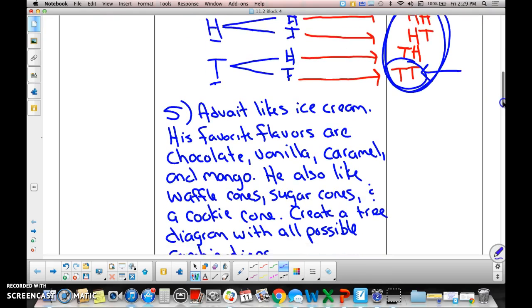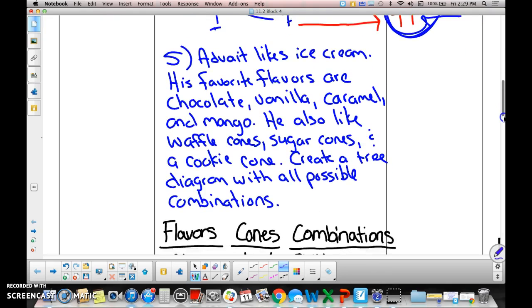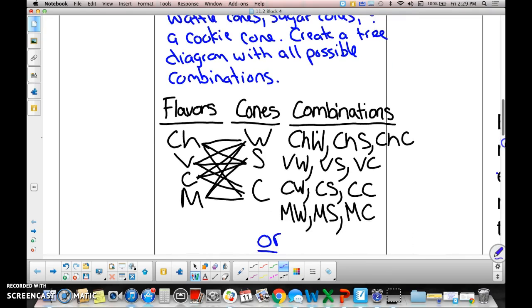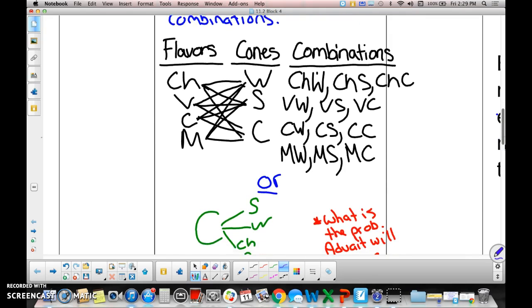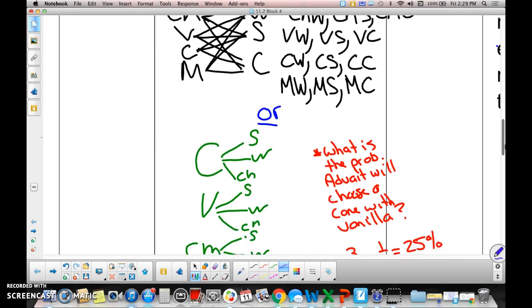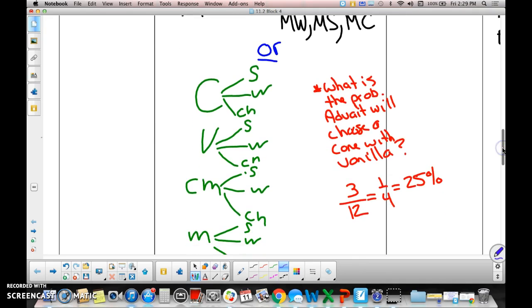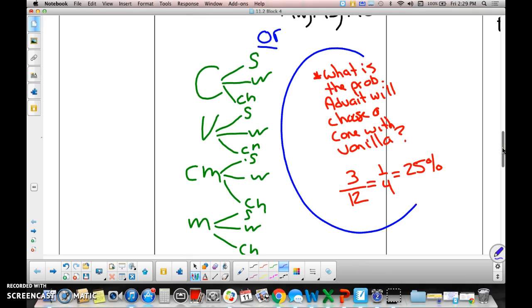Number five, we have Oddbot and his ice cream and his different ice cream cones that he likes. And we put together a couple of different tree diagrams. So you can see that the first tree diagram has a lot of funky things going on with the arrows. The second tree diagram is a little bit, according to me, more organized. And then right here, we ask the question, what is the probability Oddbot will choose a cone with vanilla ice cream? This right here is vanilla. The probability is three out of twelve, which is one fourth.